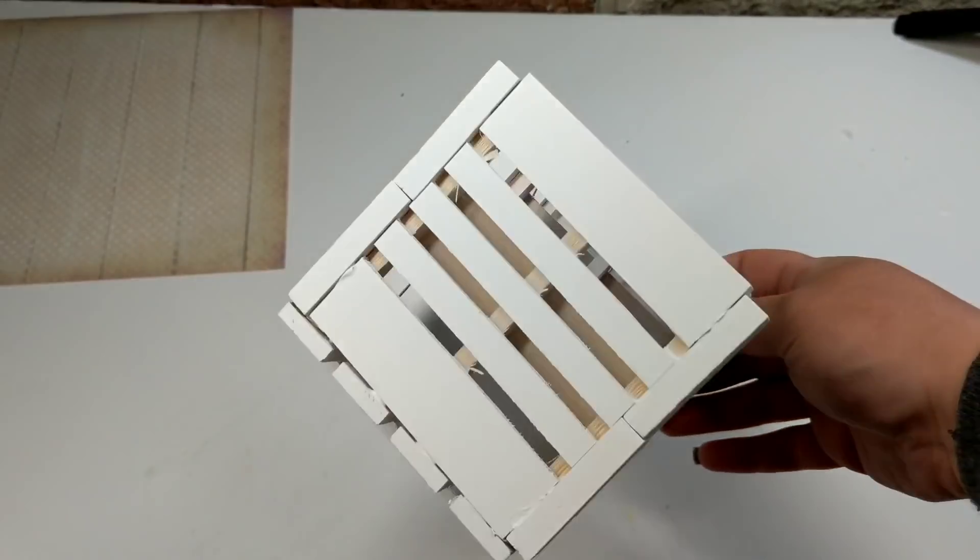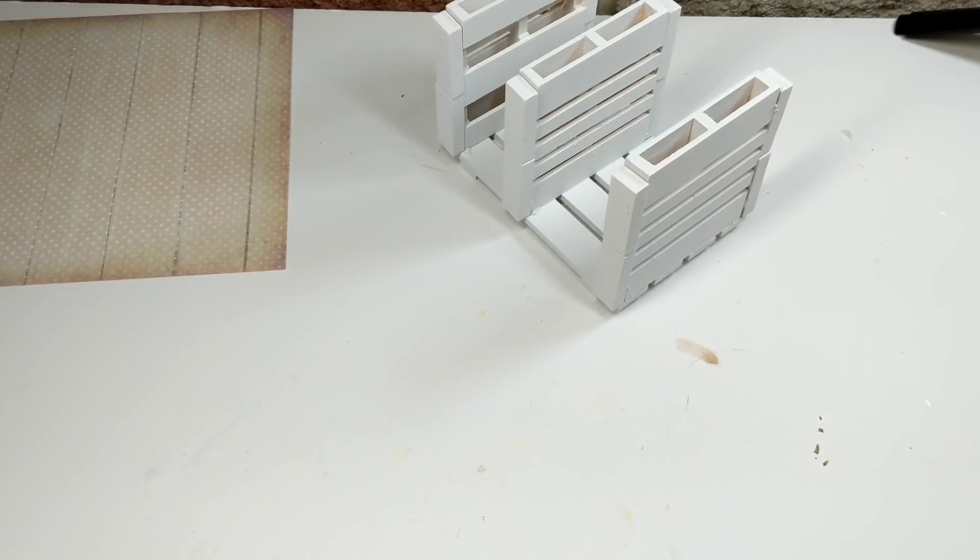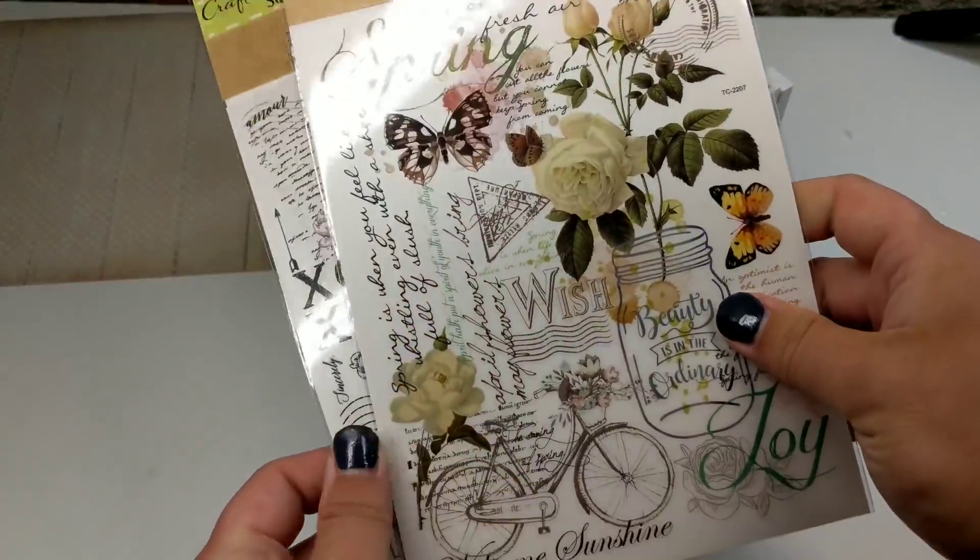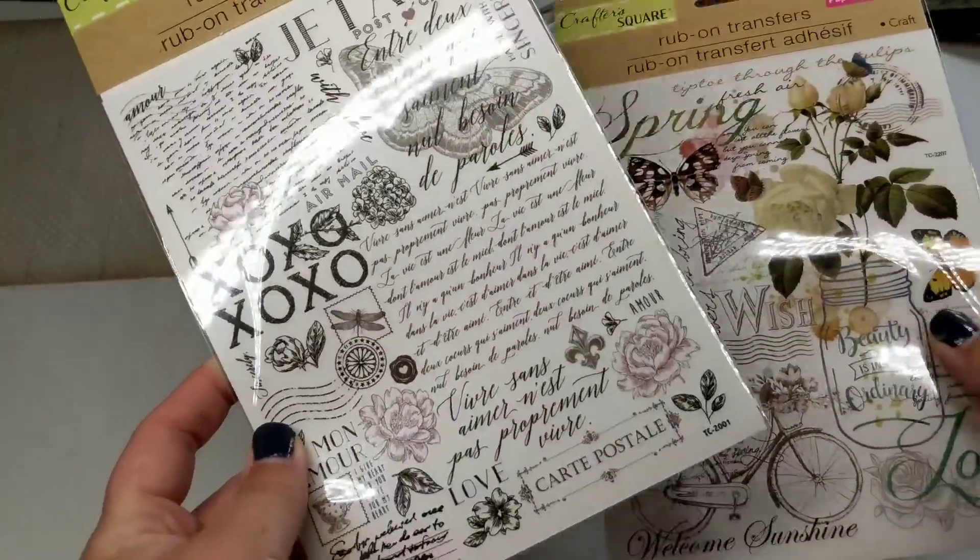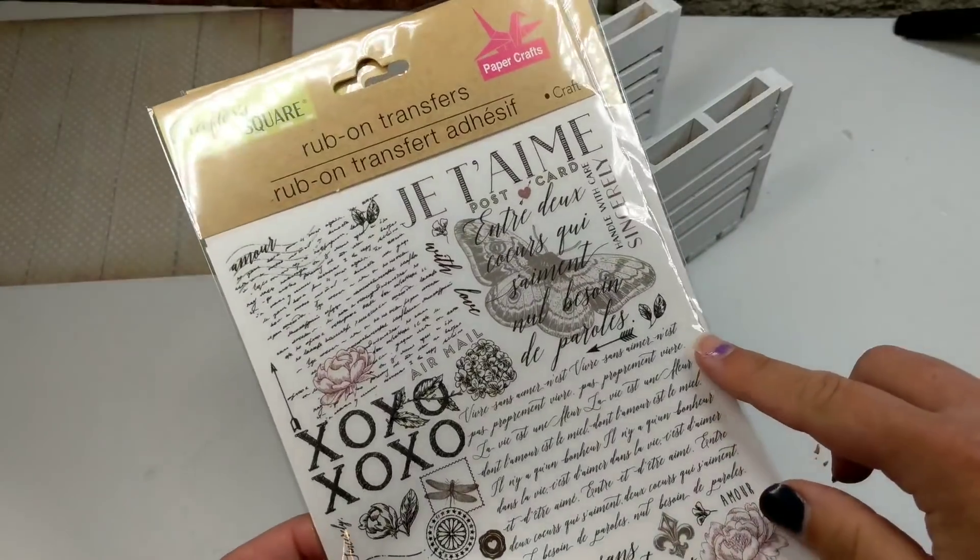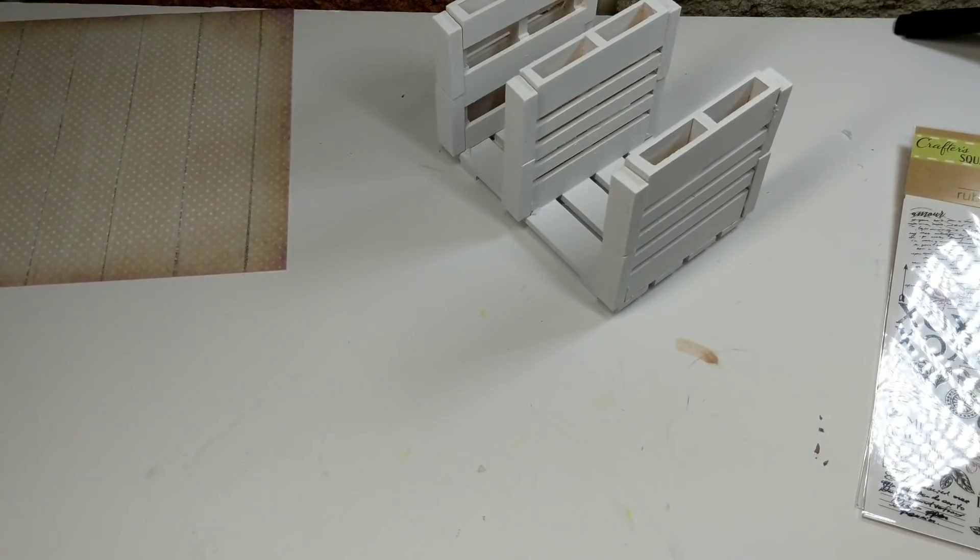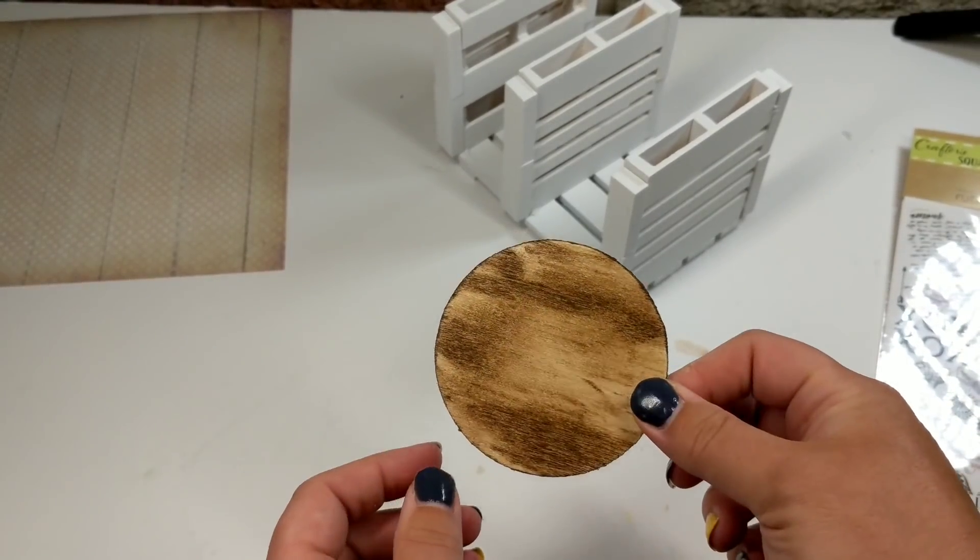I was not real worried about getting all the little crevices spray painted just because of the style that I'm going for here. I am gonna be using these Dollar Tree transfers I found because it's postal. And it just so happens that this is a little postal thing.